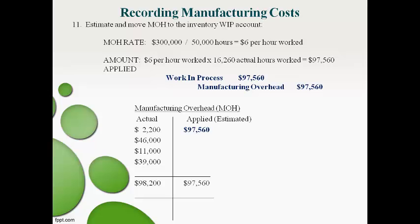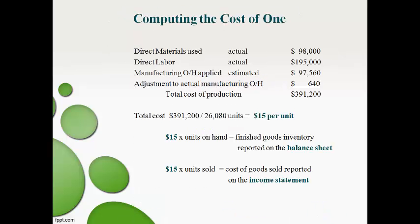The temporary manufacturing overhead account now has a debit balance of $640. Total manufacturing overhead actually incurred was $98,200, while the amount estimated and moved to WIP was $97,560. The estimated amount is lower than the actual amount, so overhead is under-applied — the under-applied amount of $640 must also be added to WIP. The manufacturing overhead account must end up with zero, as it is just a temporary account. The total actual cost divided by the total actual units manufactured gives the actual cost per unit. That cost per unit multiplied by units on hand is reported on the balance sheet, and multiplied by units sold gives cost of goods sold on the income statement. Product costs are reported on both the balance sheet and the income statement.